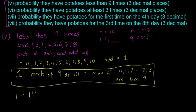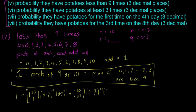So we write it out: 1 minus [ (10 choose 9) × 0.7⁹ × 0.3¹ + (10 choose 10) × 0.7¹⁰ × 0.3⁰ ]. That first term is P(potatoes 9 times) and the second is P(potatoes 10 times). Sticking all of that into the calculator gives an answer of 0.851. That's the probability of them having potatoes less than nine times.